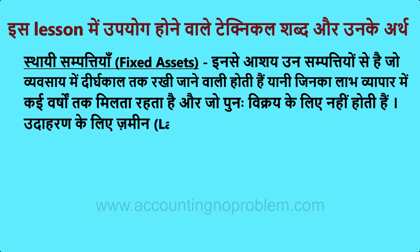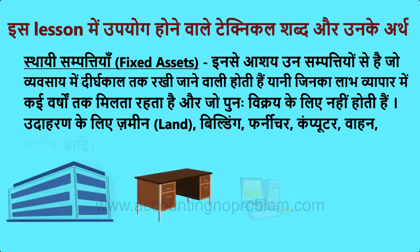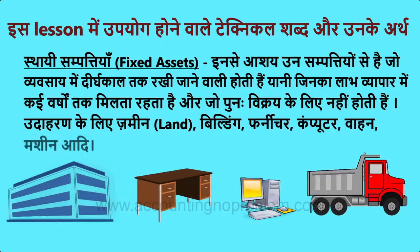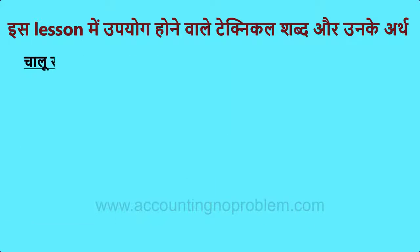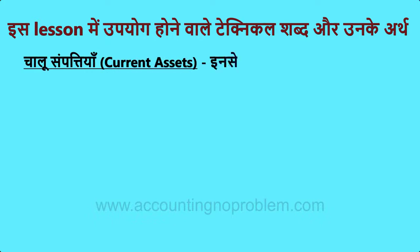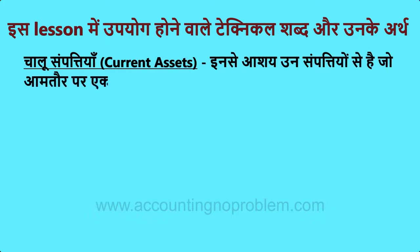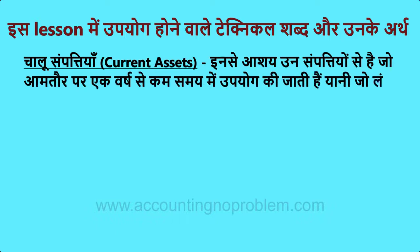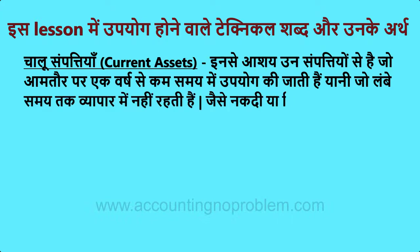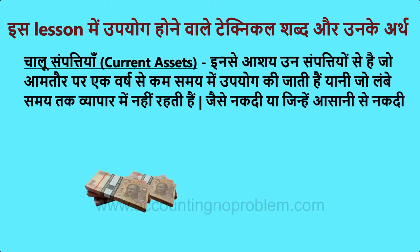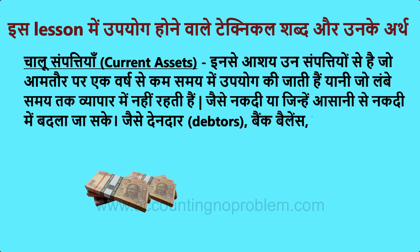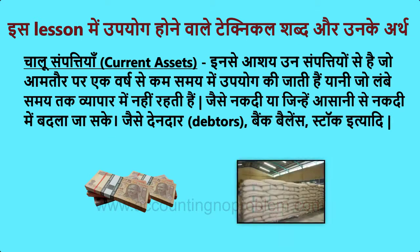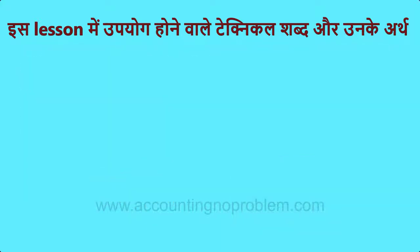Fixed Assets के उदाहरण हैं: ज़मीन, building, furniture, computer, वाहन, machine आदि। चालू संपत्तियां यानि Current Assets — ऐसी संपत्तियां जो आम तौर पर एक वर्ष से कम समय में उपयोग की जाती हैं, यानि जो लंबे समय तक व्यापार में नहीं रहतीं, जैसे नकदी, या जिन्हें आसानी से नकदी में बदला जा सके, जैसे देनदार, bank balance, stock इत्यादि।